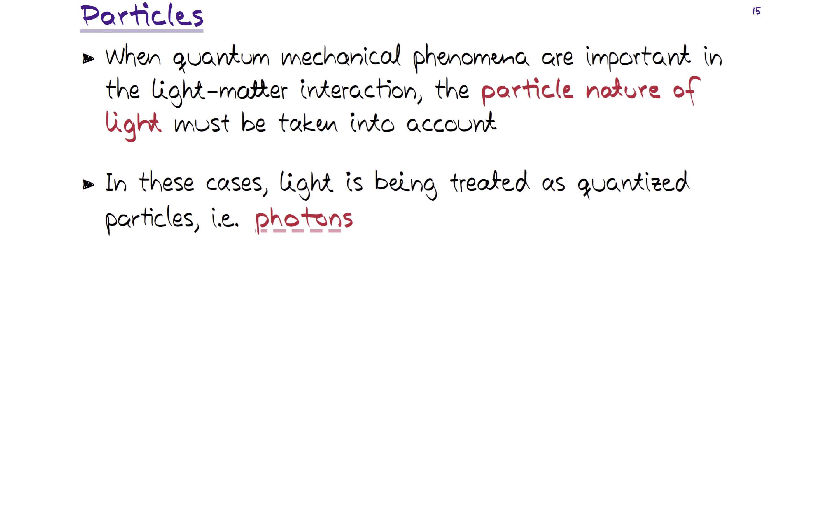Each photon is associated with a given energy that can be calculated using frequency nu or f, and then frequency times the Planck constant h gives us the energy of a single photon. Or if we are using the concept of angular frequency omega, then we multiply that with the reduced Planck constant, the h-bar parameter.